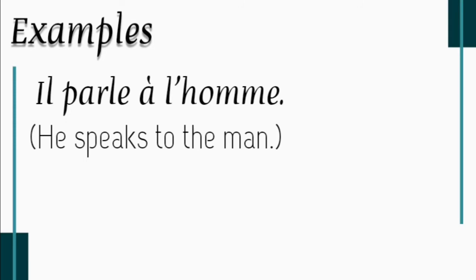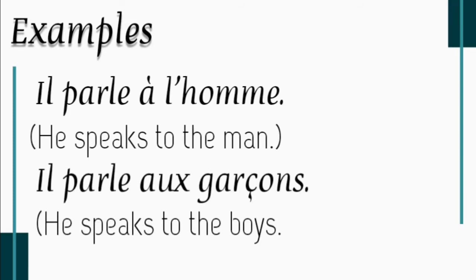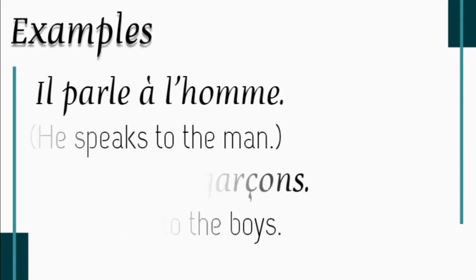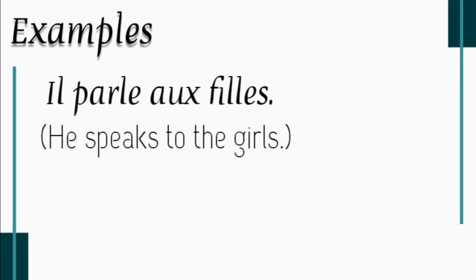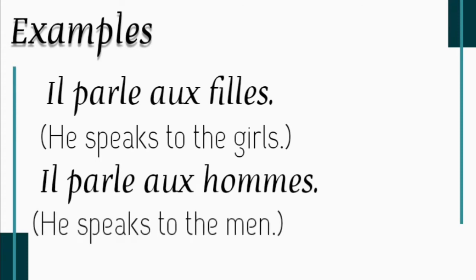Now let's see the plural form — how to use aux. Il parle aux garçons — he speaks to the boys. Il parle aux filles — he speaks to the girls. Il parle aux hommes — he speaks to the men. So in all these cases, plural nouns are used — it could be masculine plural, feminine plural, or even a plural noun starting with a vowel. If it is plural, we use aux.